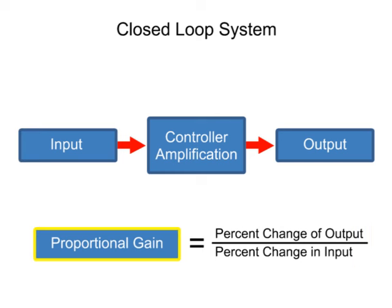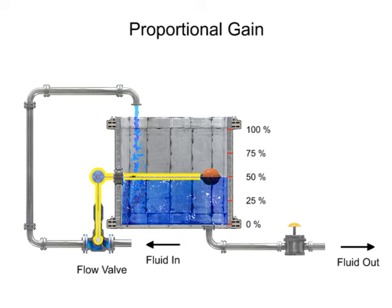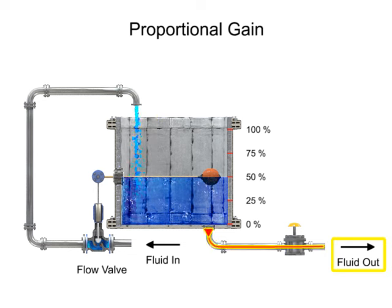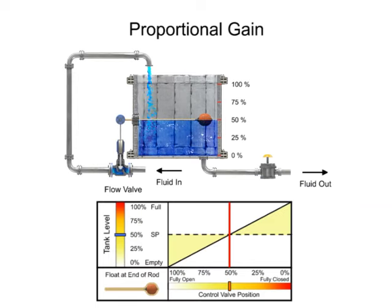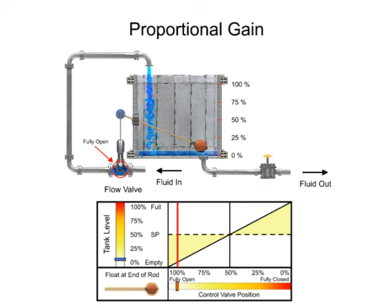To illustrate the concept of gain, a common process of regulating the level of fluid in a tank with a float attached to a control valve is used. The float mechanism is designed so that when the tank level is half-full, the flow valve is open to the position that causes the amount of fluid entering the tank to equal the amount leaving. The float on the end of the rod is positioned to meet the minimum and maximum flow capability of the valve. The valve is actuated by the float to a fully open position when the tank level is low, and fully closed when the tank level is full.